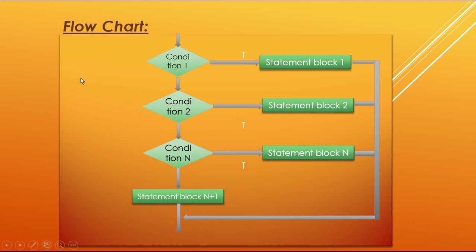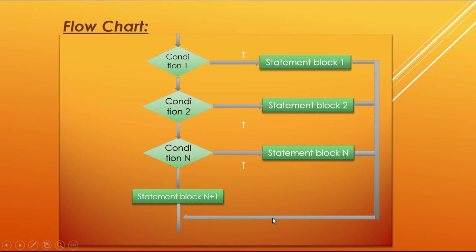Let us view the flowchart. When the program starts and the compiler reaches condition one, if the condition is true it will execute statement block one and then terminate. But if the condition becomes false, it goes straight to the second condition. If the second condition is true, it executes statement block two and terminates, skipping the remaining conditions. If condition two is also false, it goes to condition N and executes statement block N, then terminates.